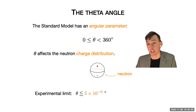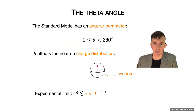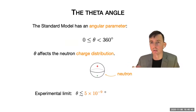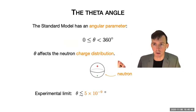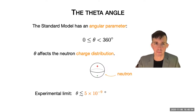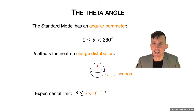The first piece of evidence that we're missing something comes from a problem in the standard model that I'll here refer to as the problem with the theta angle. The standard model has a free parameter, theta. It's an angle. It takes a value between zero degrees and 360 degrees, and on general grounds, we expect some random value in this range.